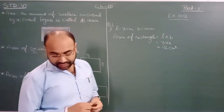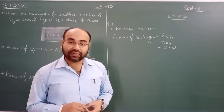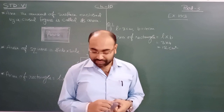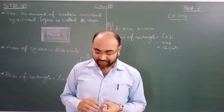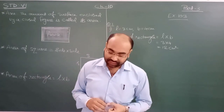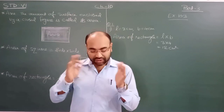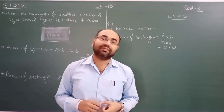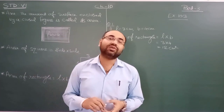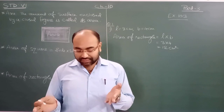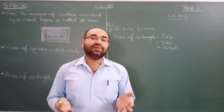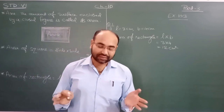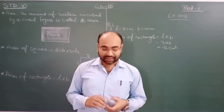That was your first sum. The remaining three you can do by yourself. For the fourth one, be very careful — one measurement is given in meters and another in centimeters. Change meters into centimeters to get the answer in centimeter square. Or if you convert 70 centimeters into meters, the answer will come in decimal points — otherwise the value is the same.